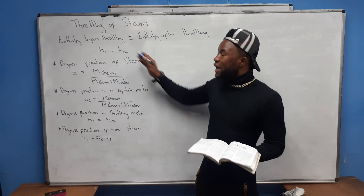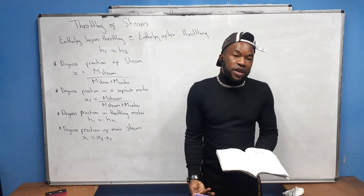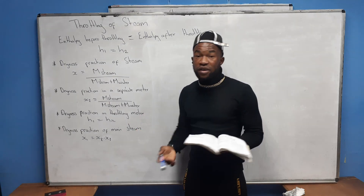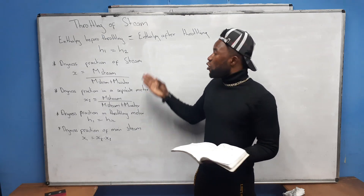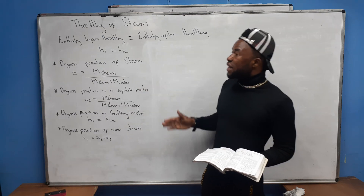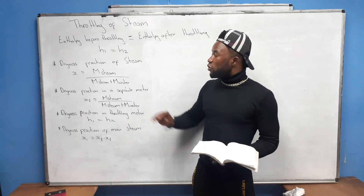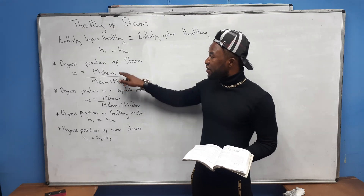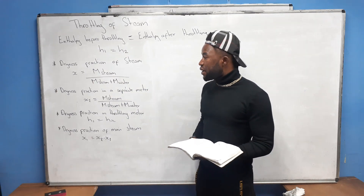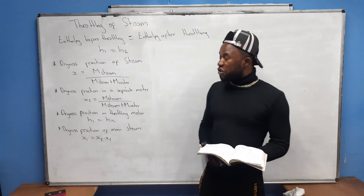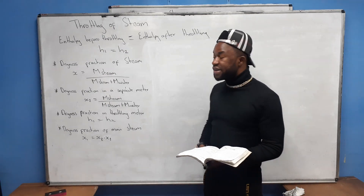So h1 equals h2, and after throttling it depends — sometimes it can be superheated, sometimes wet, or sometimes dry. We also have the formula to calculate the dryness fraction of steam, which is x, and to get the dryness fraction it's the mass of steam divided by the mass of steam plus mass of water.